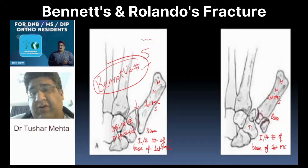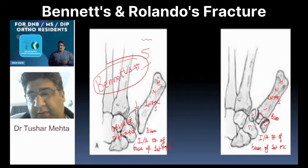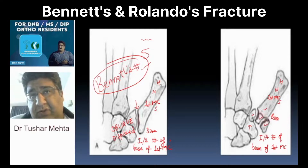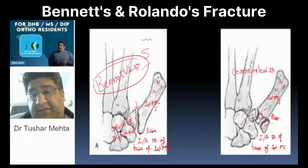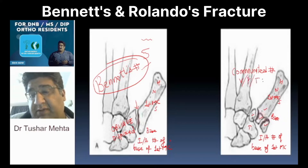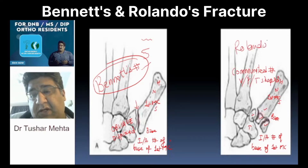Is this fracture having more than two fragments? I do think so — one, two, three, probably even four. So, with these smaller and smaller fragments, I am definitely going to call it a comminuted fracture. Apart from that, I can see a V shape — sometimes you can see a Y shape, sometimes you can see a T shape. So, this fracture you have just seen is what is called Rolando's fracture.